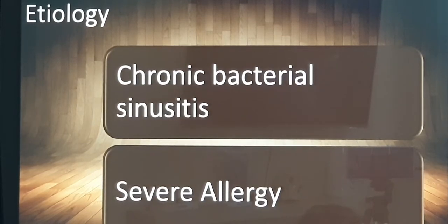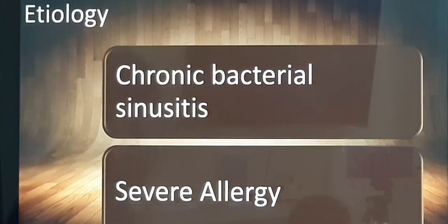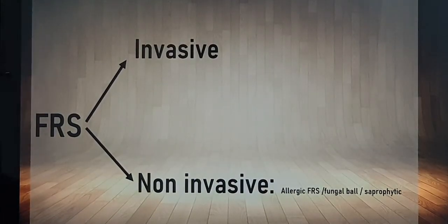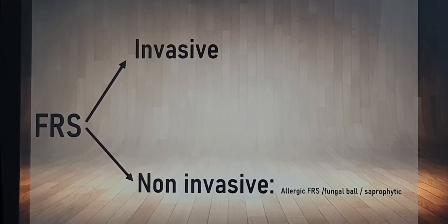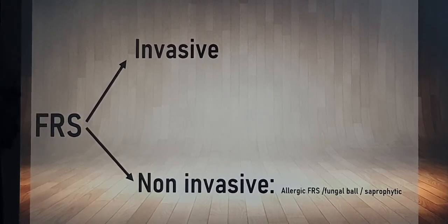When you have severe allergy and you have fungus, the main point is that the presence of fungus activates the immune system of the body, and the immune system over-reacts to it — that produces the symptoms. The classification of fungal rhinosinusitis can be divided into two parts: invasive type and non-invasive type. In the invasive type, the fungus penetrates down into the mucosa, invades blood vessels, and destroys the surrounding bones. This is the invasive type.